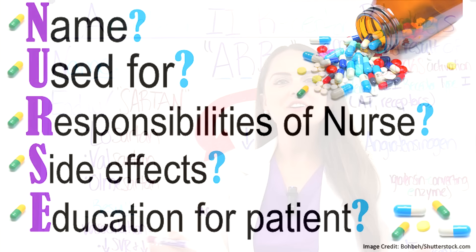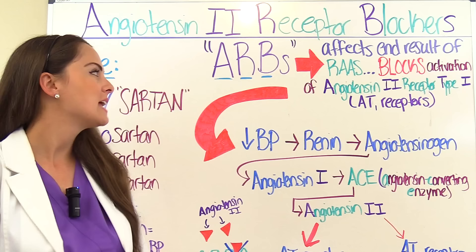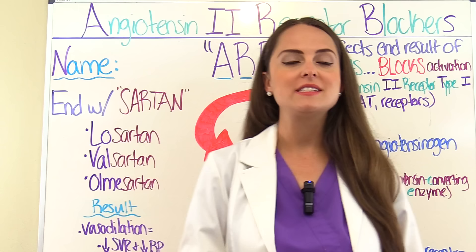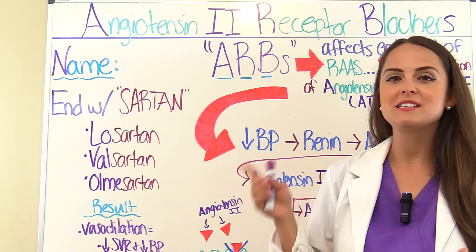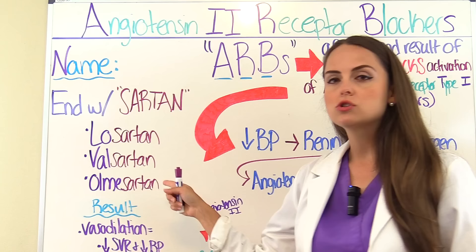First, let's talk about the name. We're dealing with angiotensin 2 receptor blockers, also referred to as ARBs. One thing to make your job easier: remember that these drugs, specifically the generic name, end with the suffix 'sartan' — S-A-R-T-A-N. So when you're looking at a patient's medication list, you'll recognize it a lot easier. Examples of ARBs include Losartan, Valsartan, and Olmesartan, just to name a few.